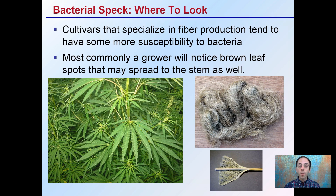Where to look for bacterial speck: cultivars that specialize in fiber production tend to have some more susceptibility to bacterial infections. So if you're growing one of those cultivars, it may be worth having a little extra scout for this particular disease. Most commonly, a grower will notice brown leaf spots that may spread to the stem as well. It looks like little brown specks on the leaves, and those fiber production cultivars are ones to give a little bit of an extra eye out for.